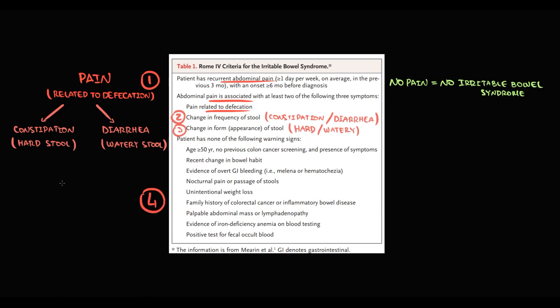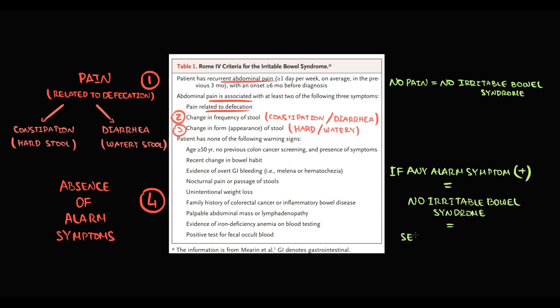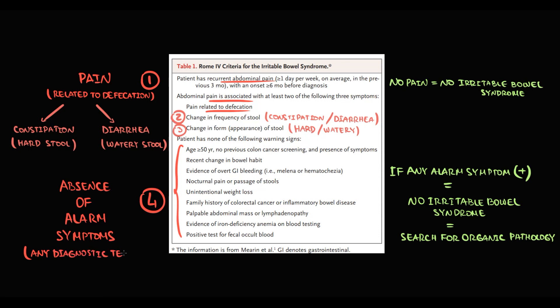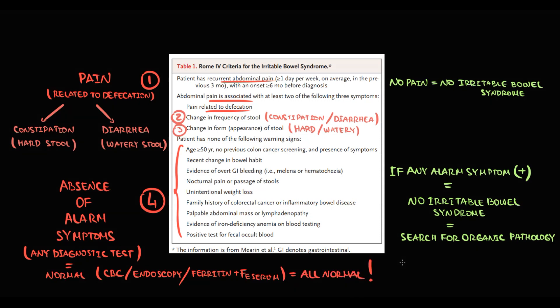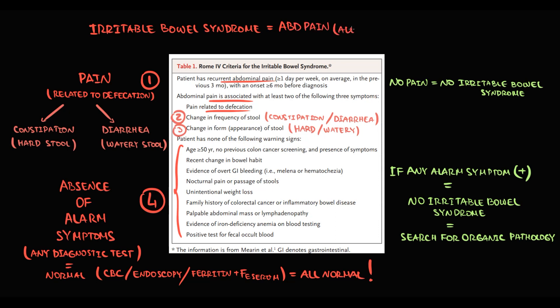A major criterion is the absence of alarm symptoms — anything suggesting cancer, bleeding, or inflammation must be absent. If any alarm symptoms are present, we cannot diagnose IBS and must search for organic pathology. IBS is therefore a diagnosis of exclusion: complete blood count is normal, endoscopy shows normal mucosa, iron deficiency markers are normal, and everything else is normal — yet abdominal pain and changes in stool frequency are still present. There is no detectable structural damage.